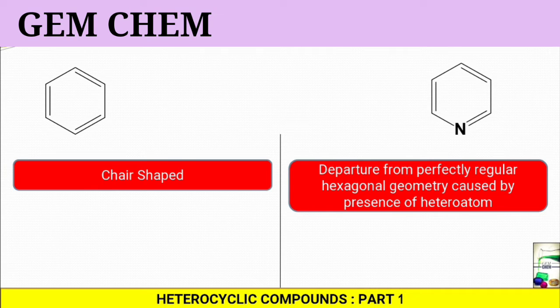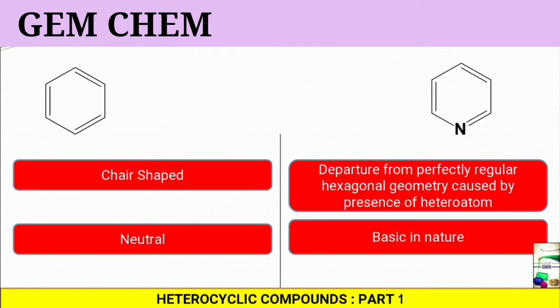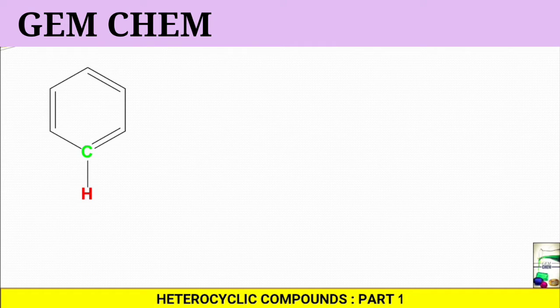Another point of difference: if we consider benzene, it is neutral, whereas for pyridine it is basic in character and properties. Why is this so? Why does benzene have no acidic or basic properties whereas pyridine has?